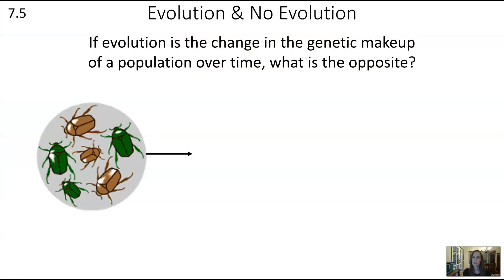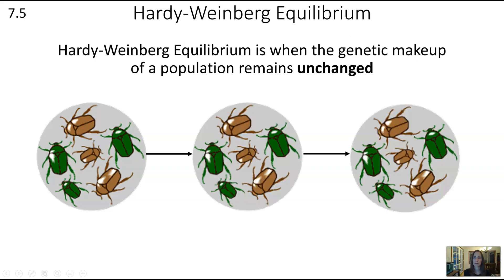Hardy-Weinberg Equilibrium is typically one of the hardest parts of AP Biology, but at the basics of it, it's pretty simple. It's kind of the opposite of evolution. If evolution is the change in the genetic makeup of a population over time, the opposite is staying the same — and that's what Hardy-Weinberg Equilibrium is. It's when the genetic makeup of a population remains unchanged, represented by beetles staying the same phenotypically, but it's really about allele frequency in the population staying the same.